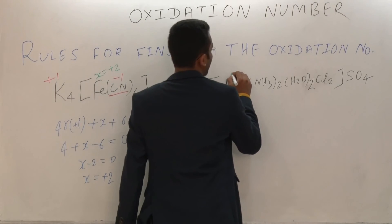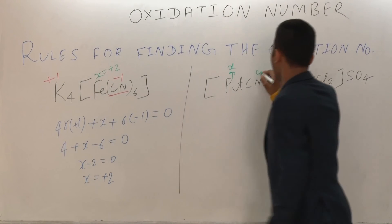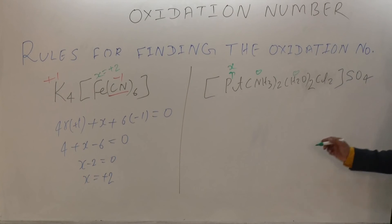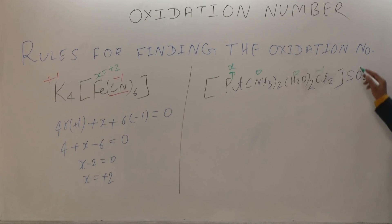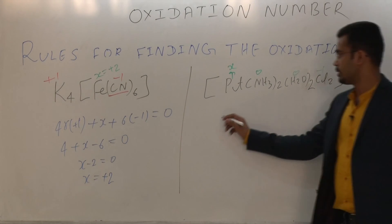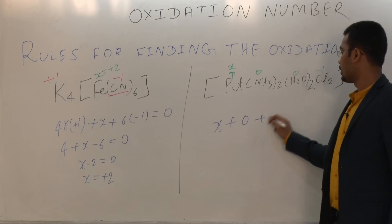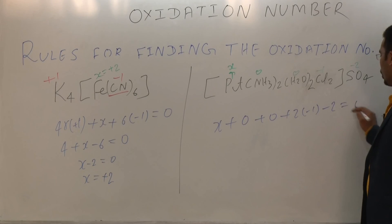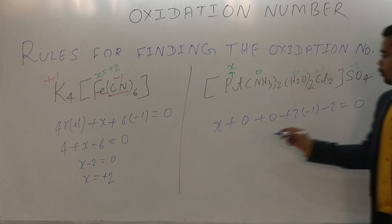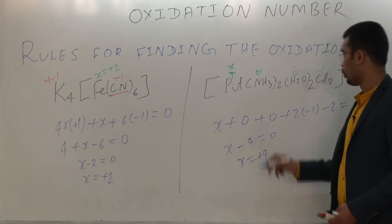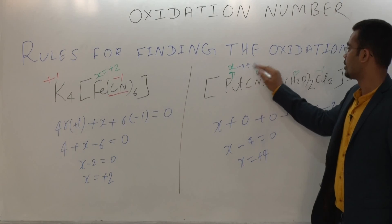For the platinum complex, the oxidation state of platinum is x. Ammonia is 0, water is 0, Cl is −1, and sulphate is −2. The net charge must equal zero: x + 0 + 0 + 2×(−1) + (−2) = 0, giving x − 4 = 0, so x = +4. Therefore the oxidation state of platinum is +4.